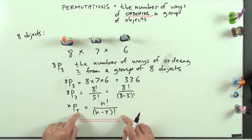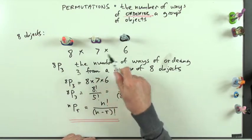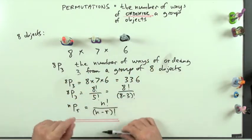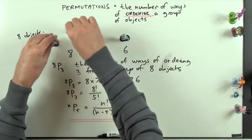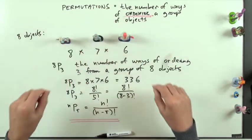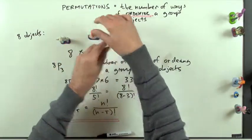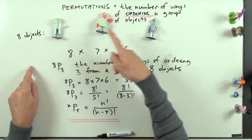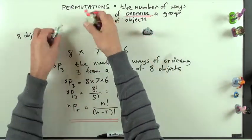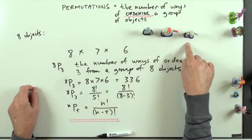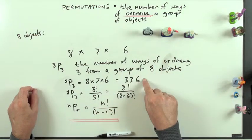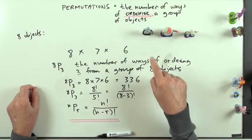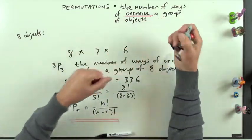But what if it wasn't a medal race — what if it was just a qualification race, so the actual order in which they finished didn't matter, as long as you had the same group of three? Well, that means there wouldn't be 336 distinct groups, because those three can be arranged in six different ways: 3 × 2 × 1 = 6. So there are six times too many groups listed in the permutations count.